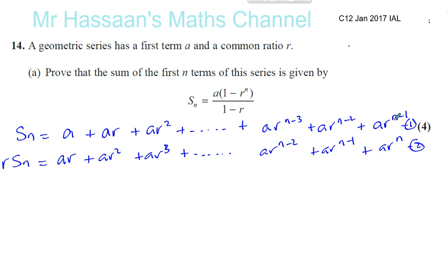And the only term in line 1 that doesn't exist in line 2 is A, and the only term in line 2 that doesn't exist in line 1 is AR to the power of n. So that's what we have to use now. If I take equation 1 and subtract from equation 2,